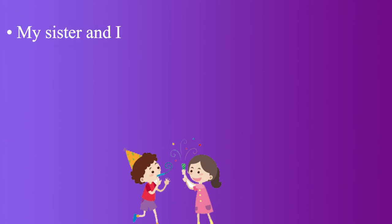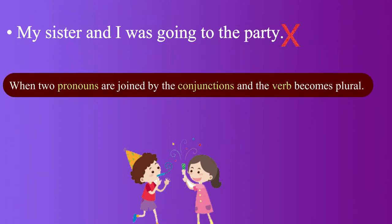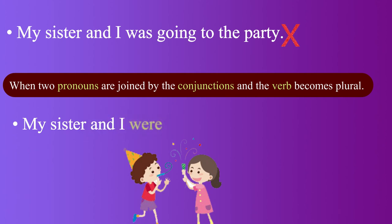Let us look at the first one: 'My sister and I was going to the party.' Please note, when two pronouns are joined by the conjunction 'and,' the verb becomes plural. Now repeat the correct sentence after me: 'My sister and I were going to the party.'